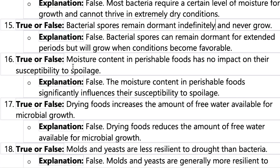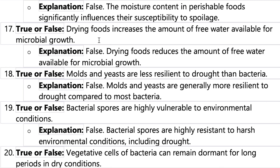Number sixteen: moisture content in perishable food has no impact on their susceptibility to spoilage. This is of course wrong — moisture significantly influences susceptibility to spoilage.